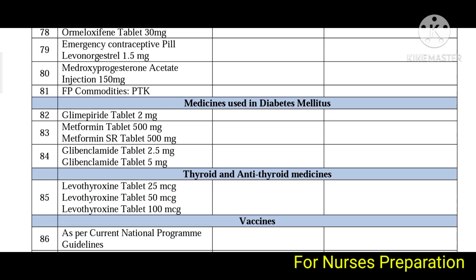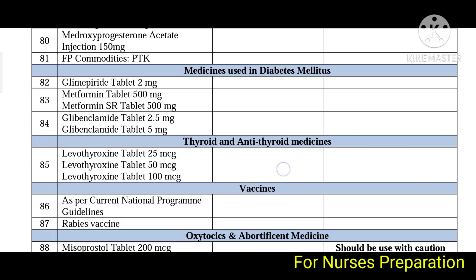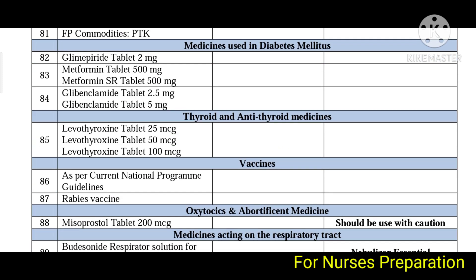Medicines for diabetes mellitus include glimepiride, metformin, and glibenclamide. Thyroid and antithyroid medicines include thyroxine tablets. Vaccines are as per the current national program, along with rabies vaccine.